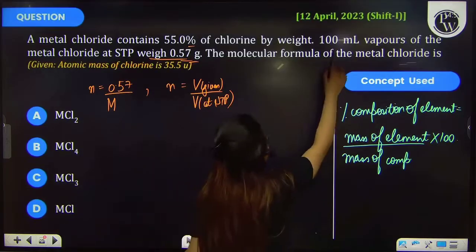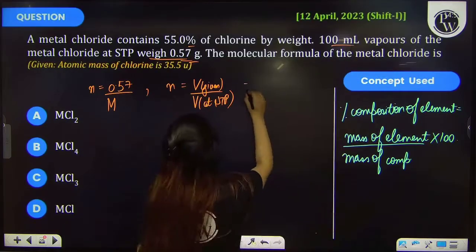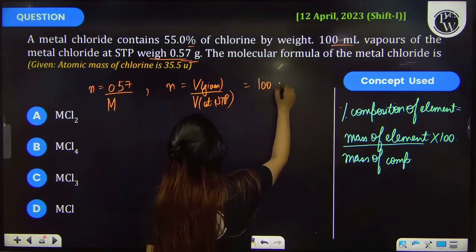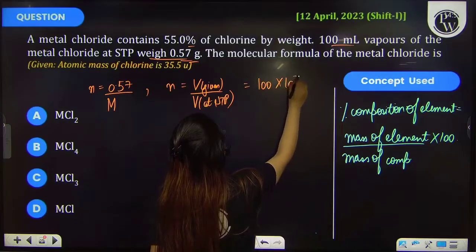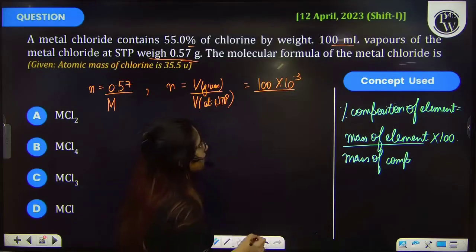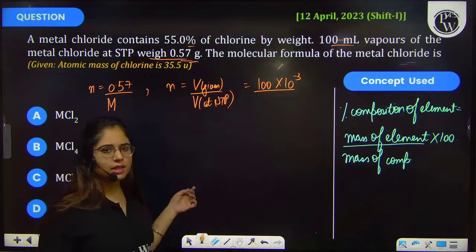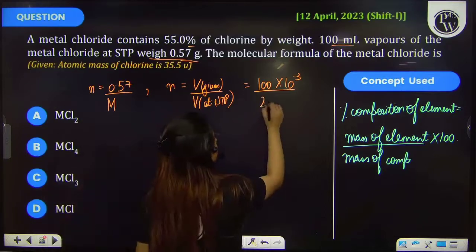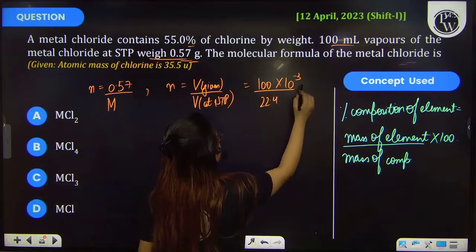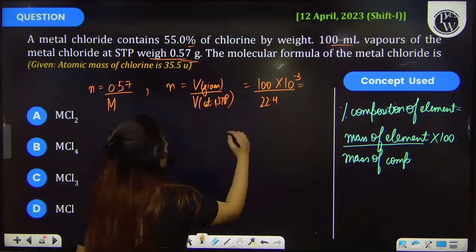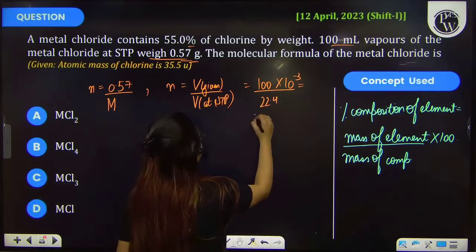The volume that is given to you is 100 ml, but this should be in liters, so 10 raised to the minus 3 will be multiplied. Further, volume at STP is 22.4. So on calculating this you will get number of moles.